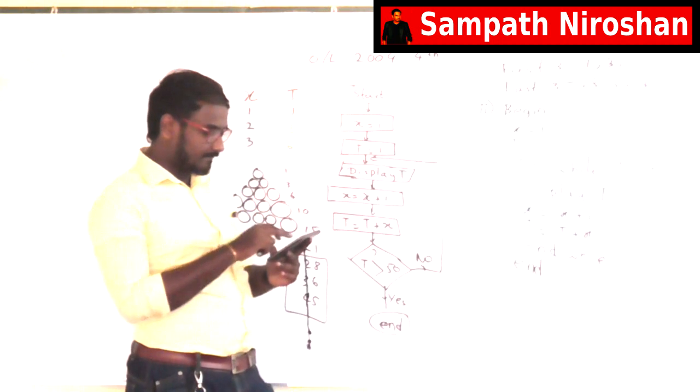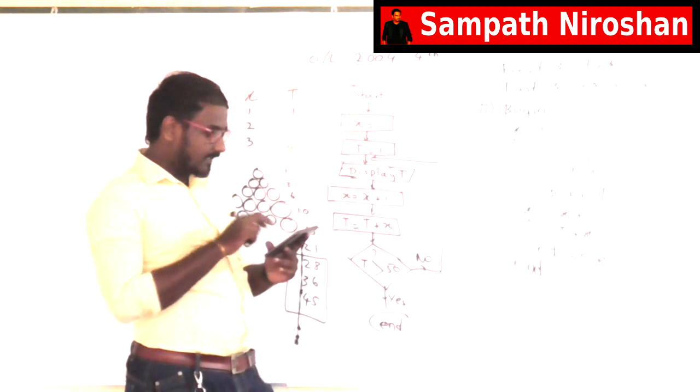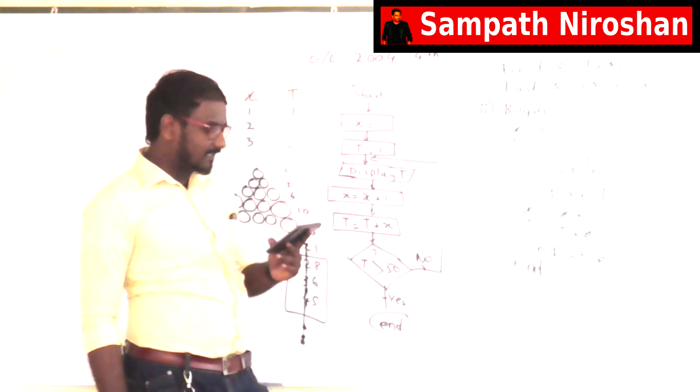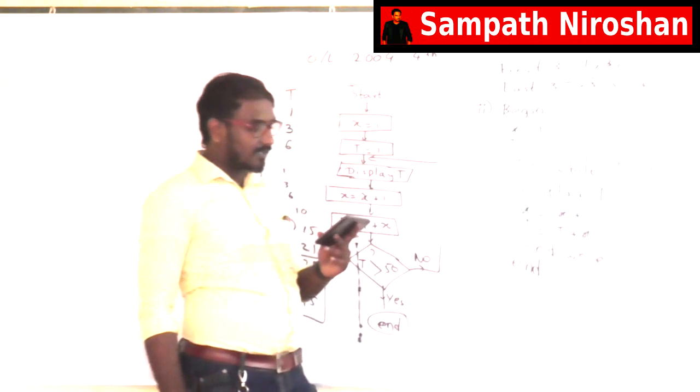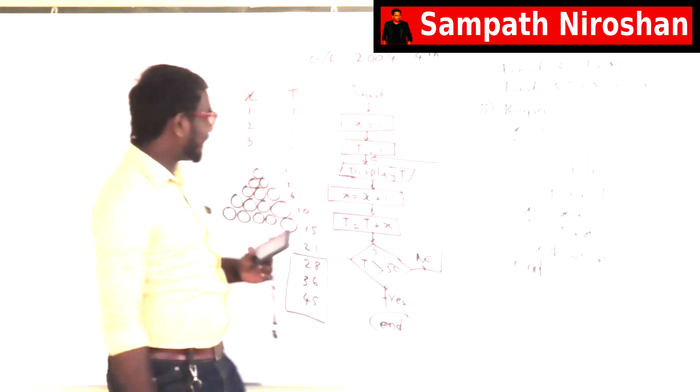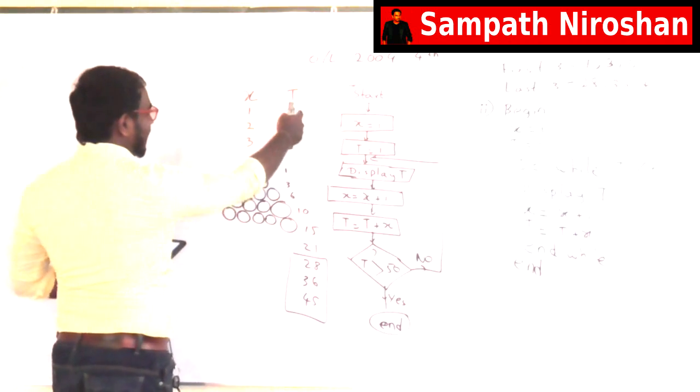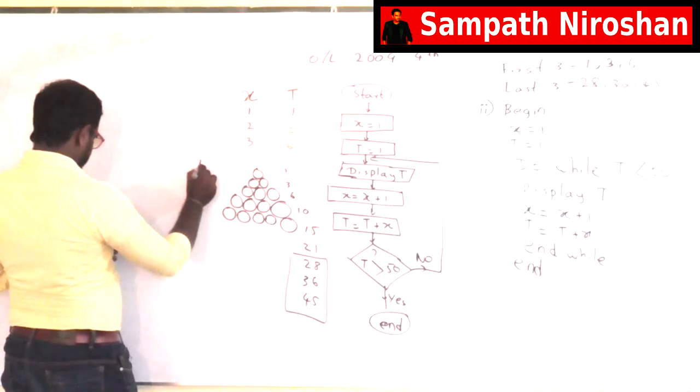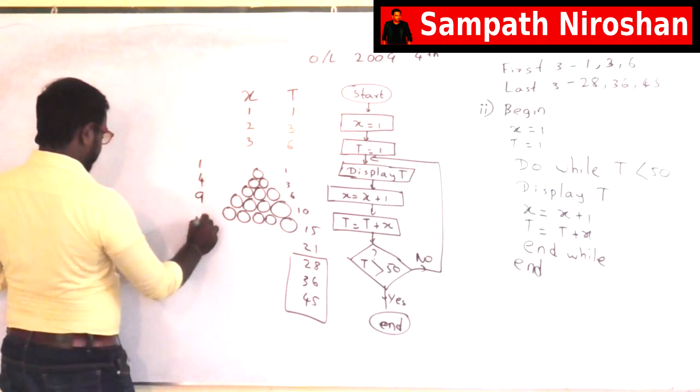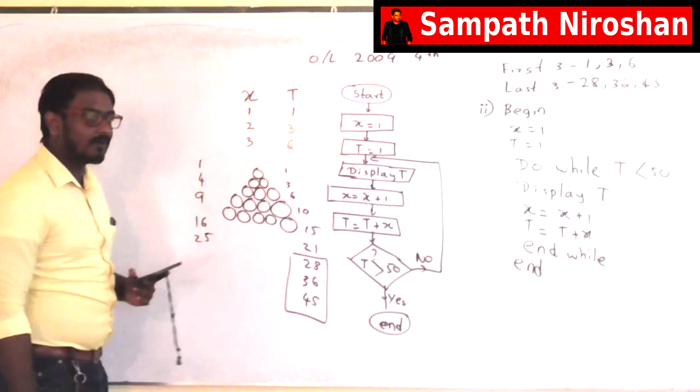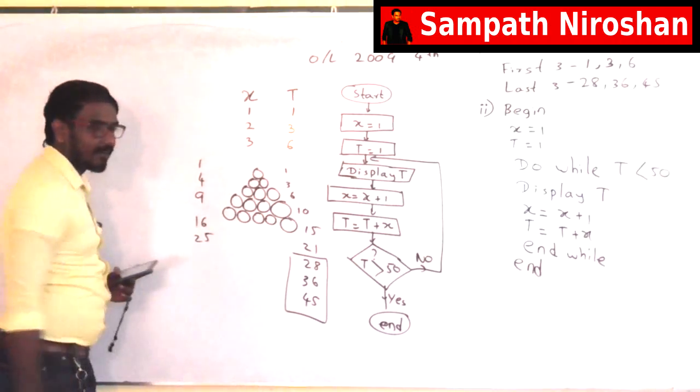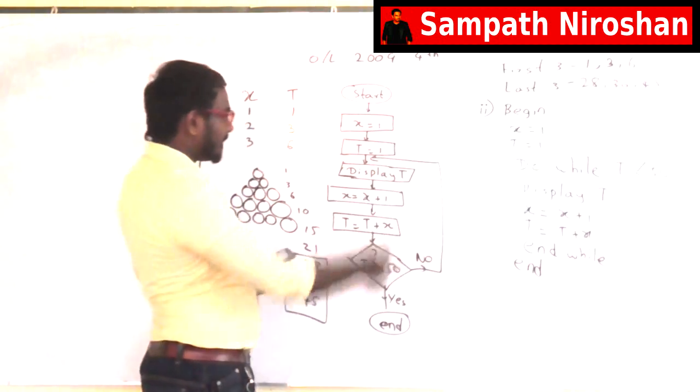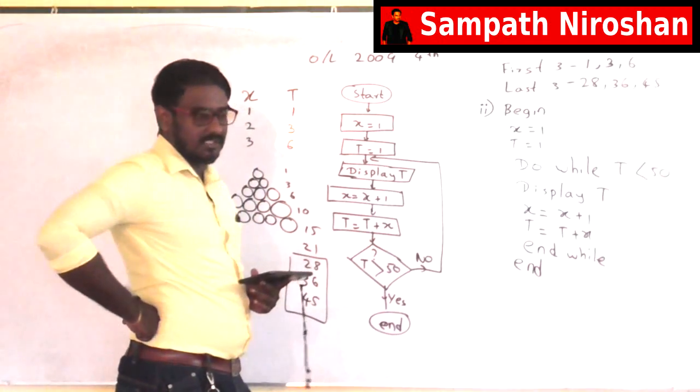And third part is the crucial part. Now in the third part it says state how to modify the given flowchart to display the number sequence 1, 4, 9, 16, 25, 36, 49. Then here what I got is 1, 3, 6, 10, 15, 25. So what do I see right here? This is a triangle number. But this right here is square numbers. So how am I going to update that code to get square numbers?